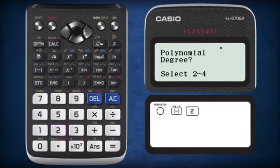Then press 2 to select polynomial. Since we are dealing with a quadratic function, we choose a second-degree polynomial.